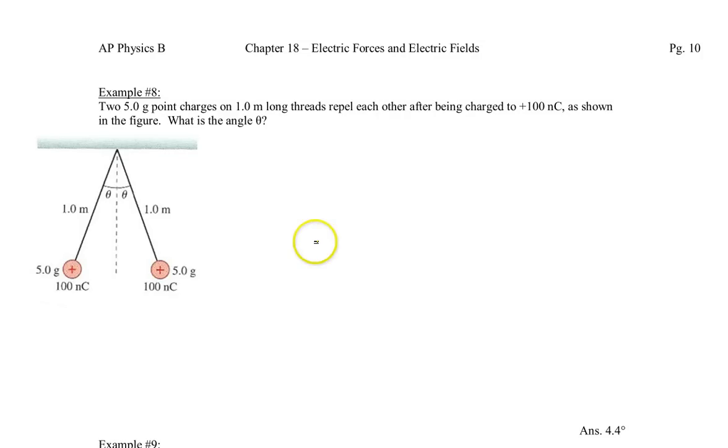Okay, welcome to example number 8. What we have is two 5-gram point charges here and here, both positive, with a 1-meter thread for both of them, and they're repelling each other because they're both like charges, each charged with 100 nanocoulombs as shown in this figure. What we're trying to do is determine this angle theta between the vertical and the thread.